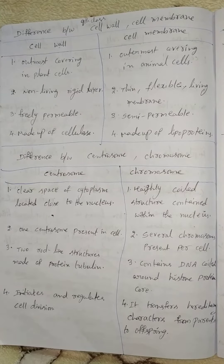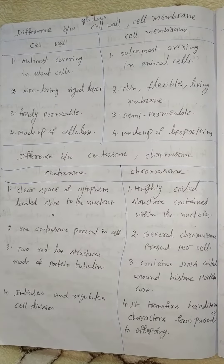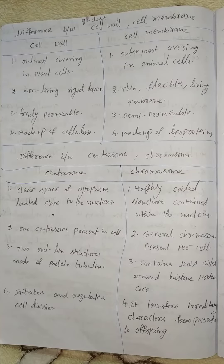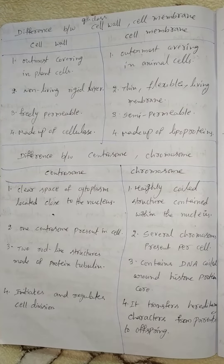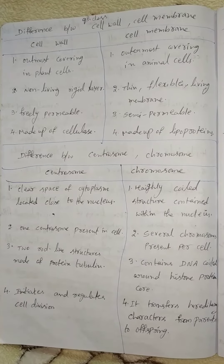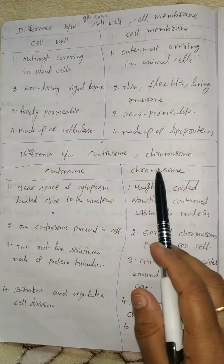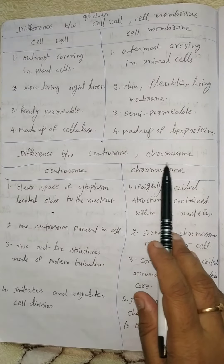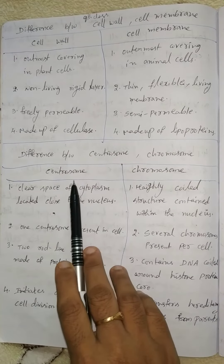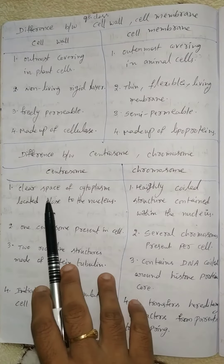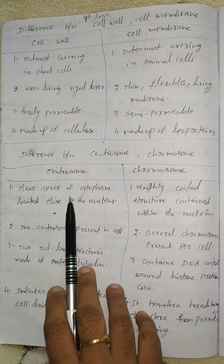Hello everyone, welcome to my channel Book of Science. Today I am teaching about ninth class biology, second chapter: cell structure. In this class we will learn about the question: difference between centrosome and chromosome. Centrosome is a clear space of cytoplasm located close to the nucleus.